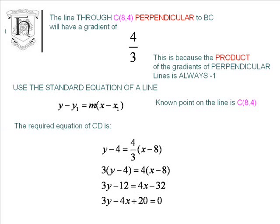Again, multiply through by 3 to get rid of the fraction, expand the brackets, collect your terms on one side, and we have the equation of the line CD.